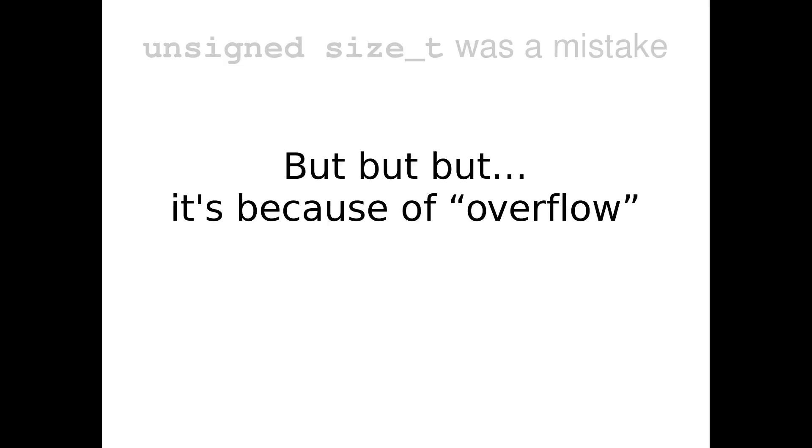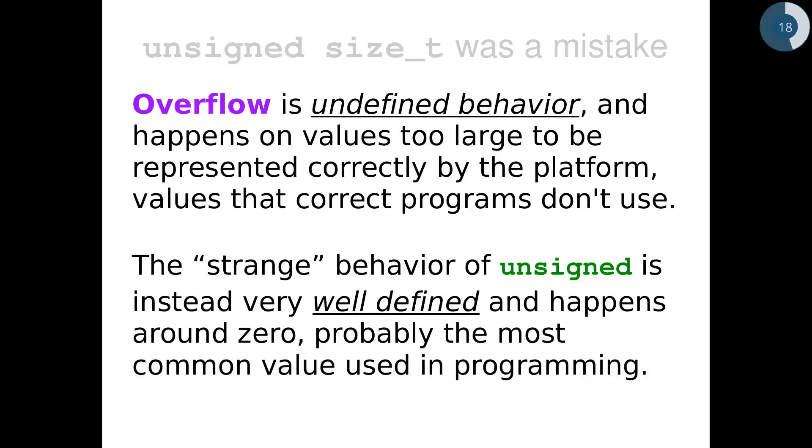But I can hear that you may say that this happens because of overflow. This is not the case. Overflow in C++ is undefined behavior and happens on values that are too large to be represented correctly by the platform. Values that correct programmers do not use. The strange behavior of unsigned is instead very well defined and happens around zero. And zero is probably the most common value used in programming. So it's not because of overflow that unsigned behaves so strangely.